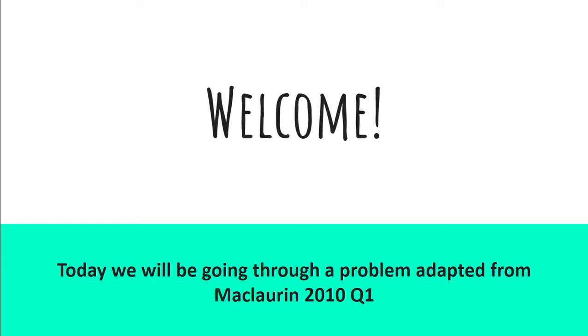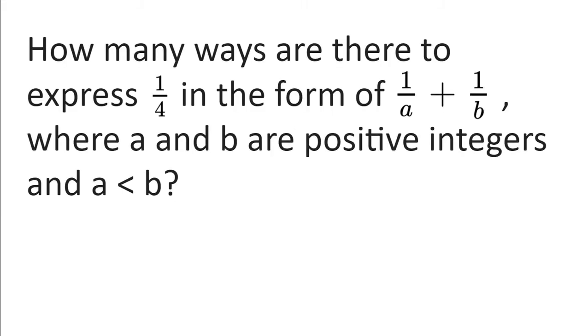Welcome. Today we will be going through a problem adapted from Maclaurin 2010 question 1. How many ways are there to express a quarter in the form of 1 over a plus 1 over b where a and b are positive integers and a is less than b?